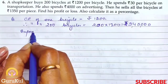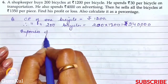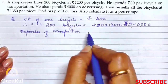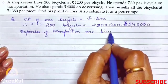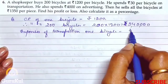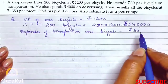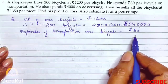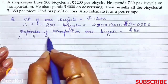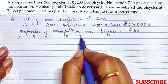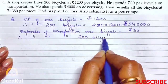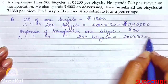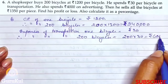Expenses of transporting one bicycle is equal to rupees 30. Therefore, expenses of transporting 200 bicycles is equal to 200 into 30, that gives us rupees 6,000.